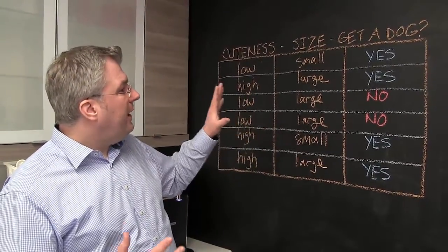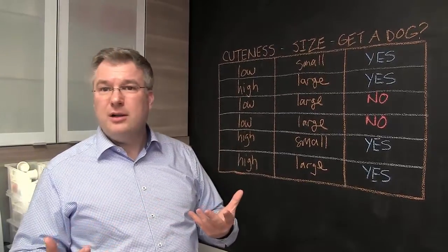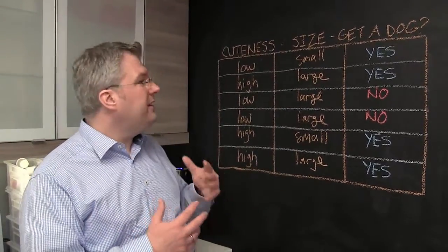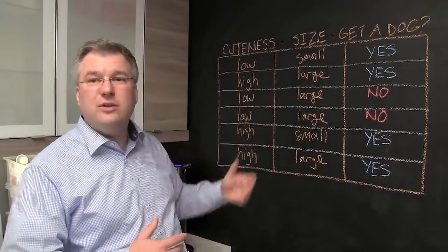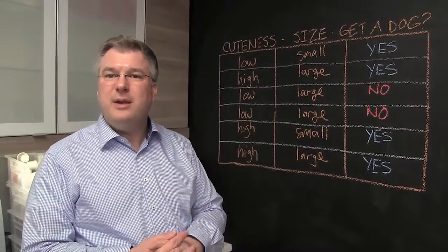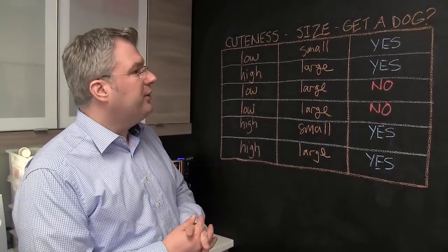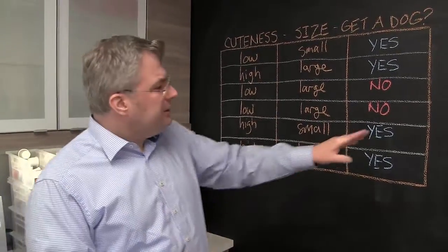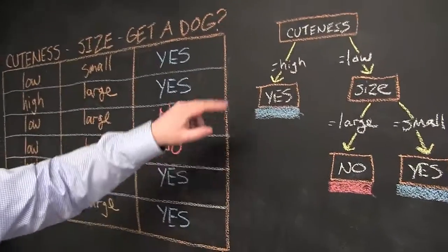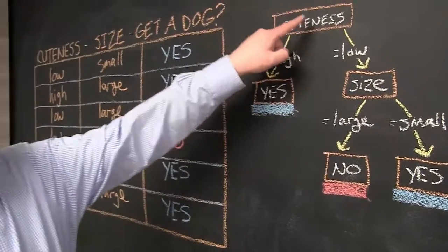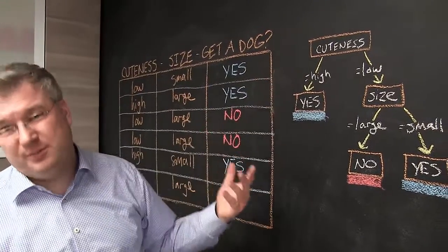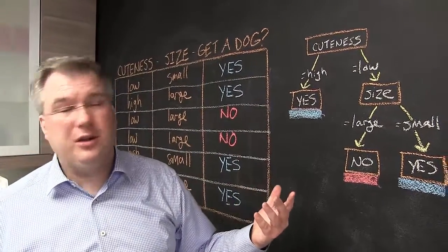And then people decide — we just collect this information. So that's a table, pretty simple actually. And we would like to create a predictive model, a decision tree model, which we can then use for a new case, for a new combination of those values, to actually make this prediction. And this is how such a decision tree could look like.